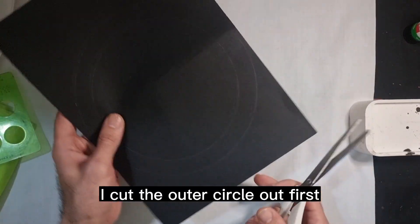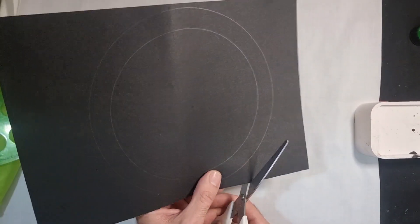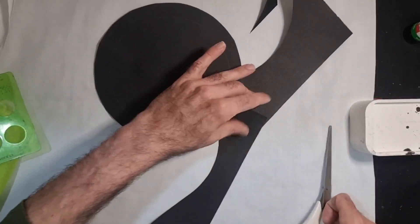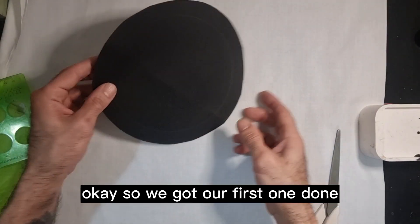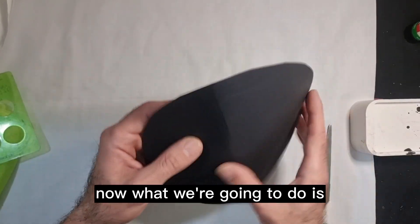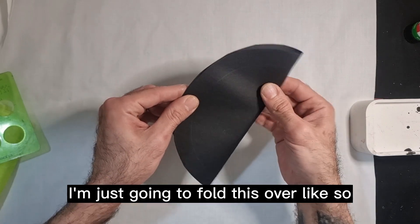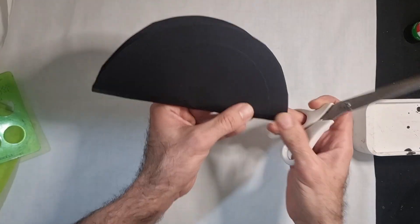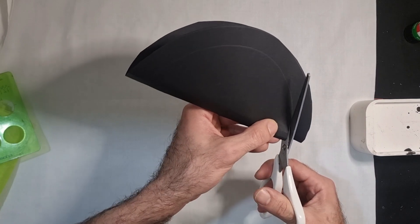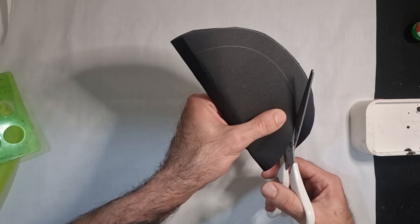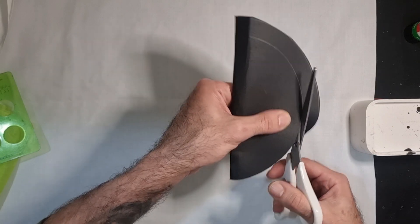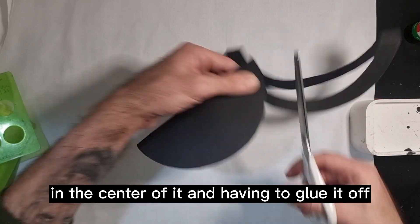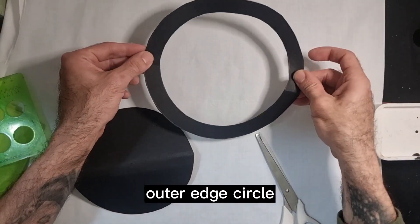What we're going to do now, I'm going to cut the outer circle out first. Okay, so we've got our first one done. Now what we're going to do is, because I don't want to cut a line into this, I'm just going to fold this over like so, not too much of a crease but just enough so I can get the scissors in, and we're going to cut the inner circle now. This should be a great way of creating it, cutting it without having to cut a big line in the center of it and having to glue it off.